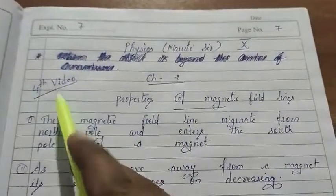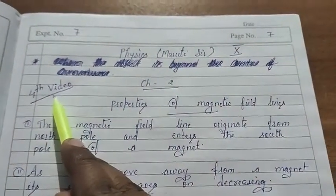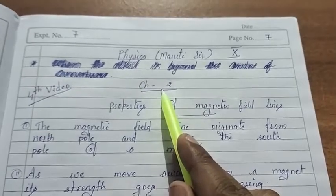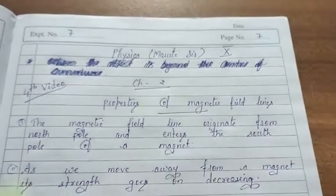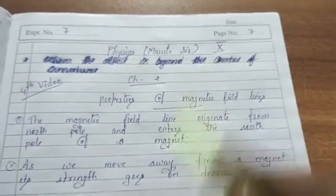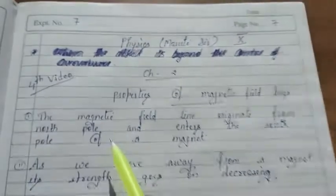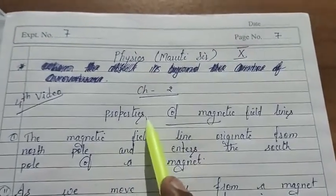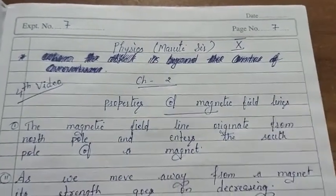Students, welcome back. This is the fourth video based on the second chapter, that is Magnetic Effect of Electric Current, in physics for Class 10. In this video, students, we are going to study about properties of magnetic field lines.